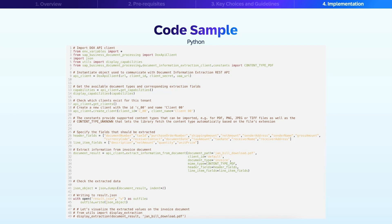Once it's created, you need to define the header and line item fields which you would like to extract. After that, you can simply call the extraction method using the API client and provide the document path.